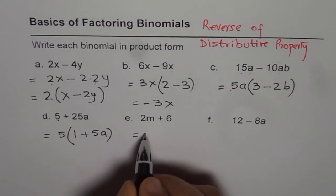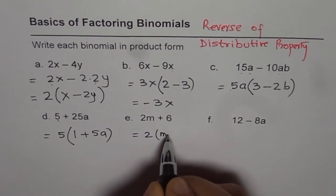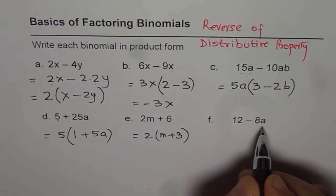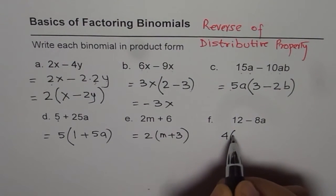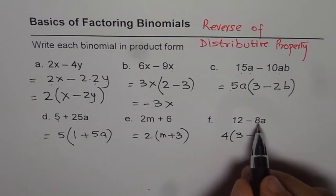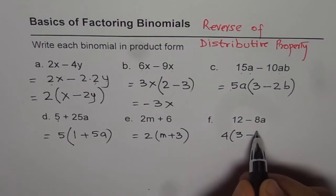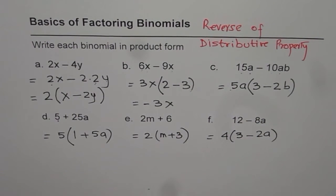For 2m plus 6, 2 is a common factor, so we get 2 times (m plus 3). And for 12 minus 8a, 4 is a common factor. 12 divided by 4 is 3, and minus 8a divided by 4 is minus 2a. So we get 4 times (3 minus 2a). That is how we can factor binomials.